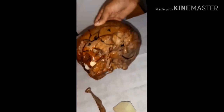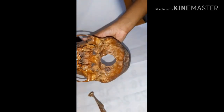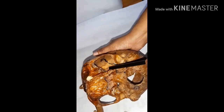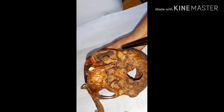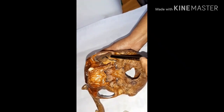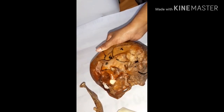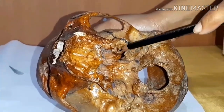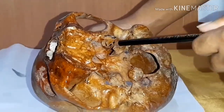If we consider the roof of the infratemporal fossa, it is basically made up of two bones: the infratemporal surface of the sphenoid bone and the squamous part of the temporal bone. Laterally there are no bony structures, so it is in direct continuity with the temporal fossa located above. In the sphenoid bone there are two special foramina: the foramen ovale, located in front, and the smaller foramen spinosum, located behind.